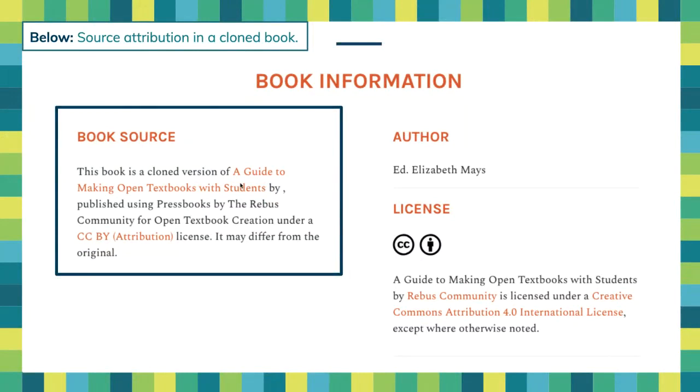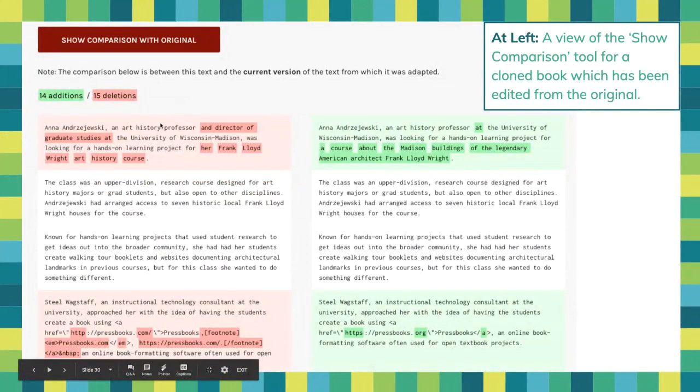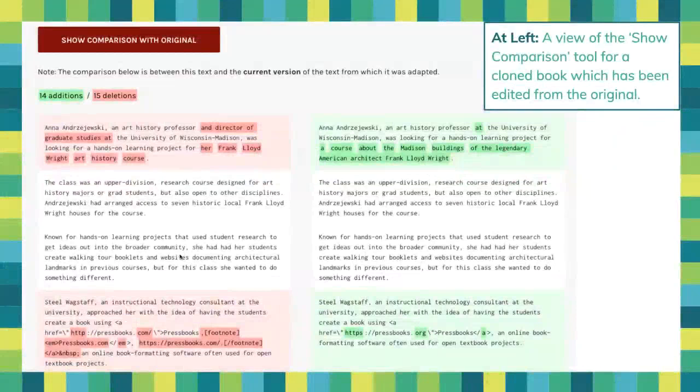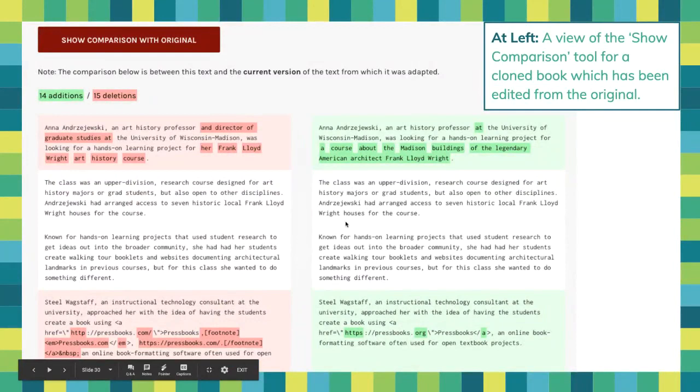Because using permissions is important, it's also important to respect the terms of the license. When we clone a book, an attribution is automatically included stating that this book is a cloned version of the parent book, with a link to the source, so that you can respect the CC BY or attribution license under which you're copying the book. You can also display a side-by-side comparison showing the live original text and your cloned version.